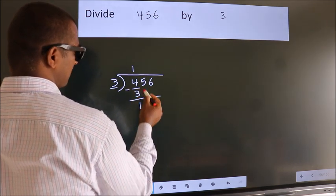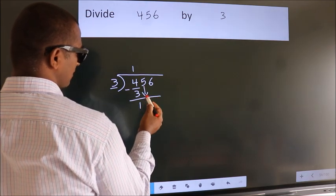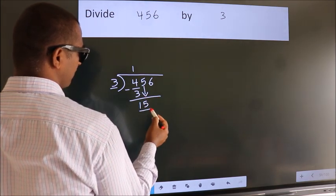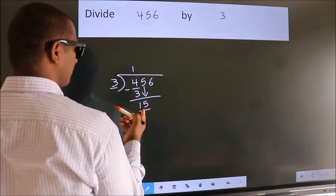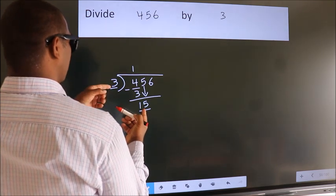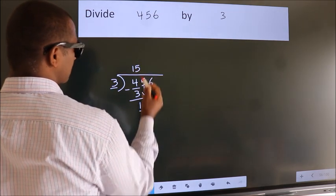After this, bring down the beside number. So, 5 down. So, 15. When do we get 15? In the 3 table. 3 fives, 15.